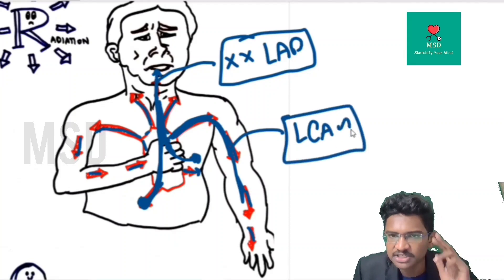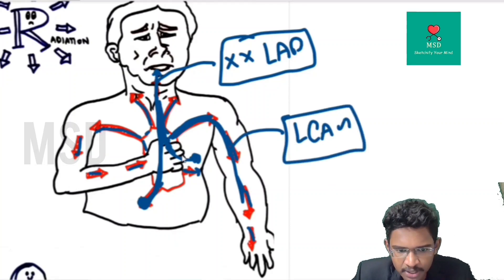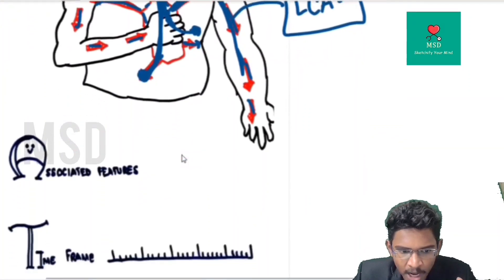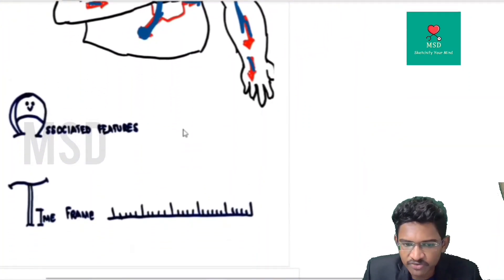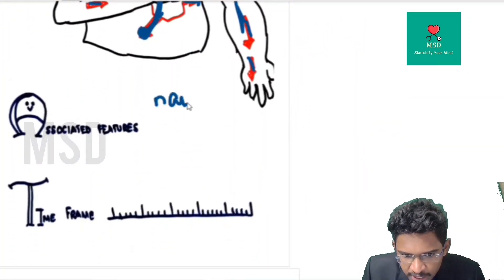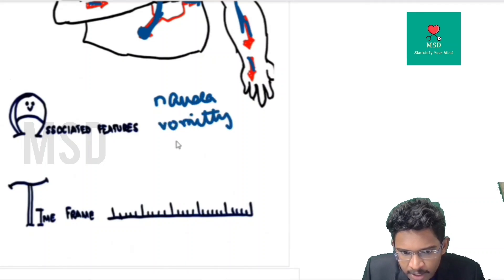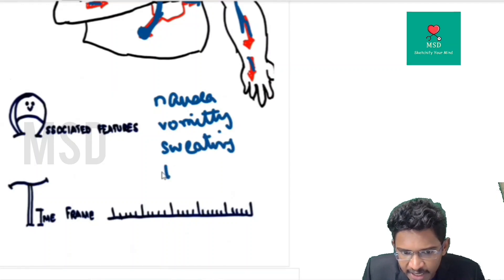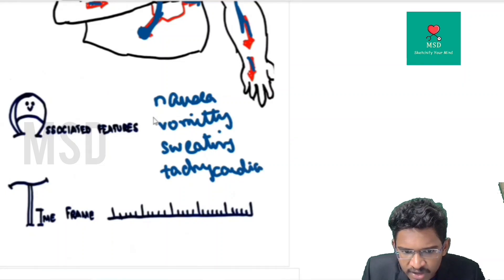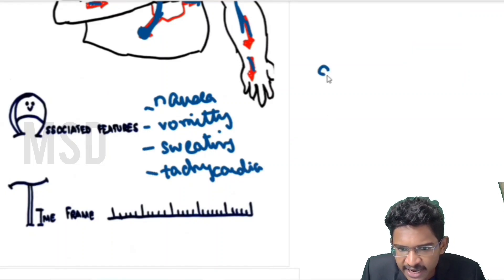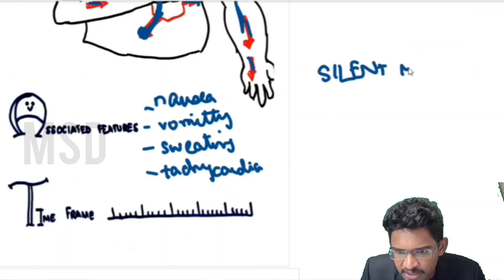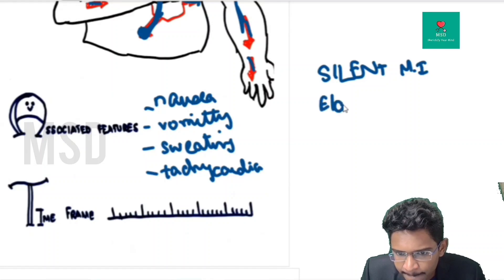Associated features include nausea, vomiting, sweating, tachycardia, and palpitations. There is a term known as silent MI, which is common in elderly patients as well as those with diabetes mellitus.